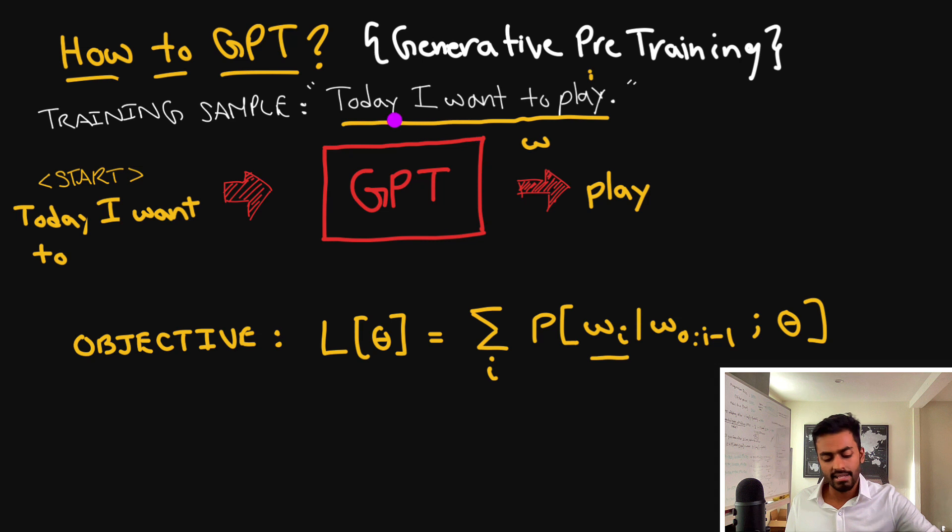Now at the end of this generative pre-training phase we're going to get a model that has some inherent understanding of language. And more practically speaking it's going to be able to generate, given a word sequence it will be able to figure out what word to generate next.